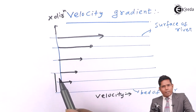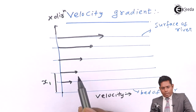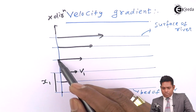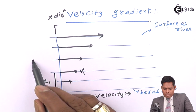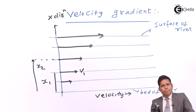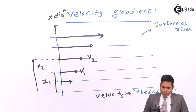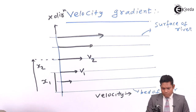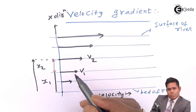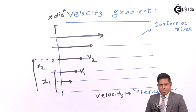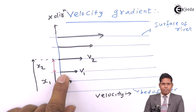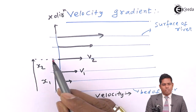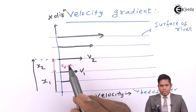I consider a layer arbitrarily at a distance of x1 from the origin, and say the velocity here for the flow is v1. Similarly, suppose another layer is at a distance of x2 from the origin and its velocity is v2. The distance between these two layers — when you move from one layer to another — is x2 minus x1, and I call this dx.